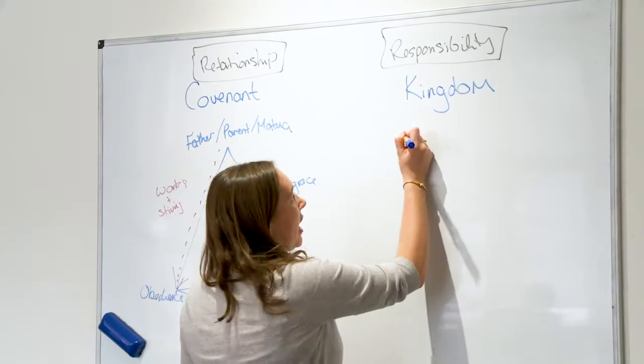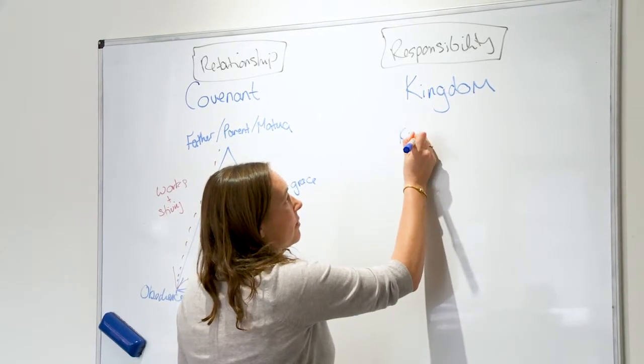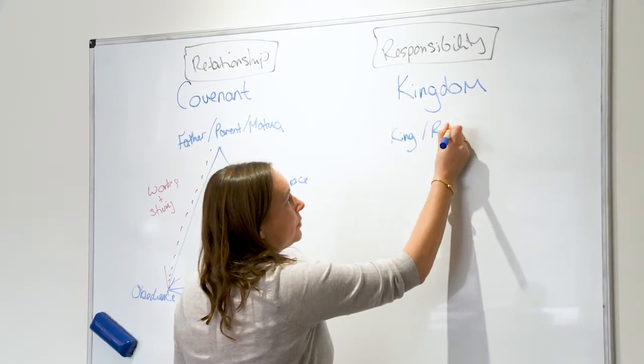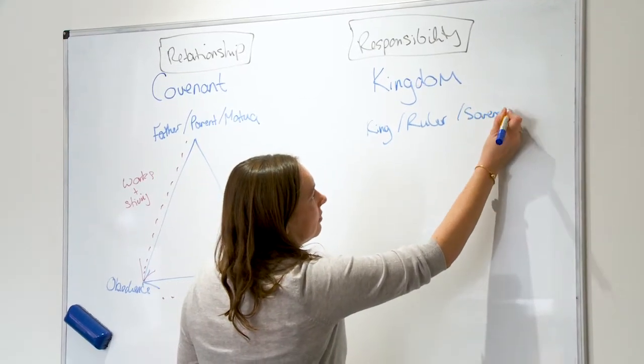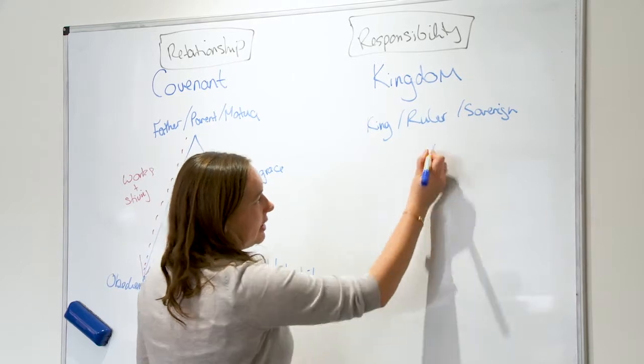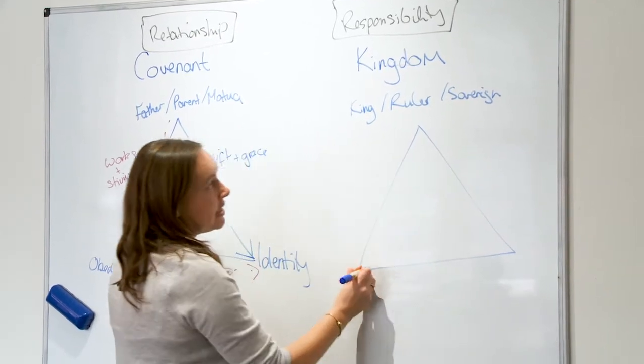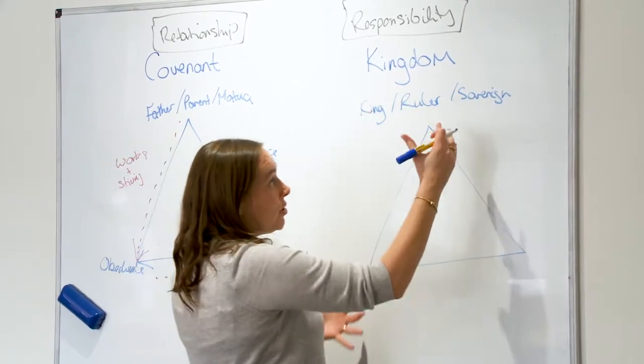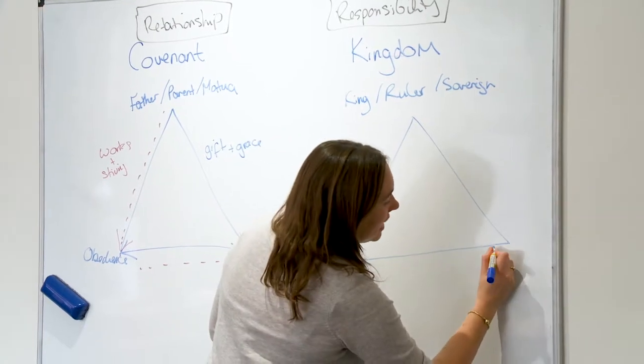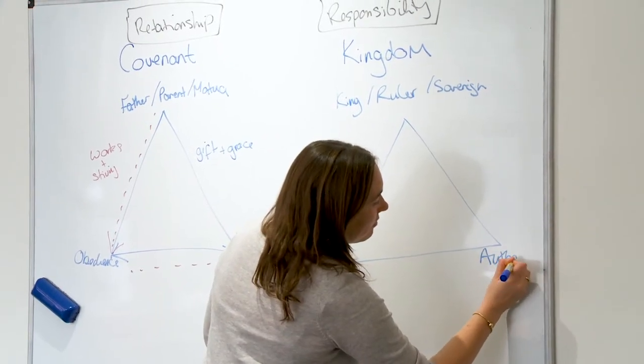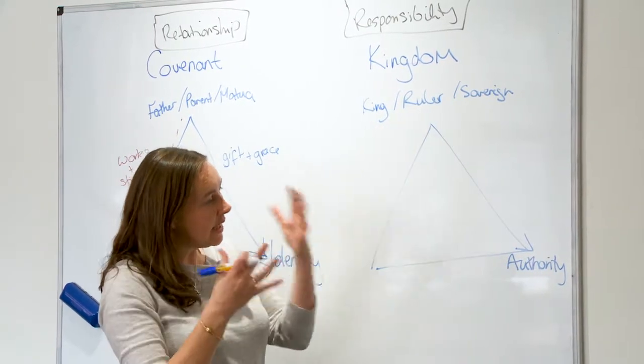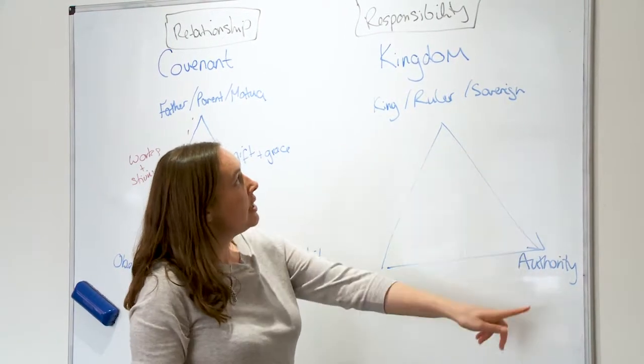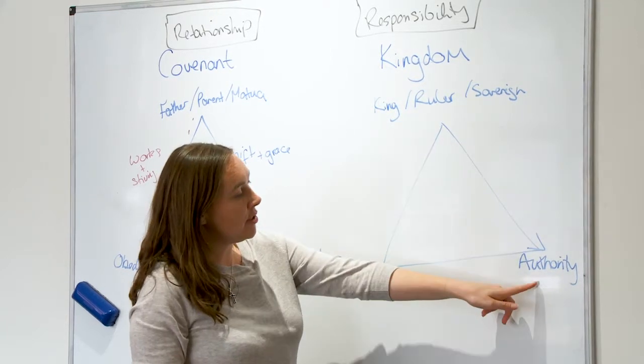Here, you may have a king, ruler, or sovereign. From that rule, that sovereignty comes authority. Authority is derived, delegated, given by the kingdom, by the ruler, by the sovereign.